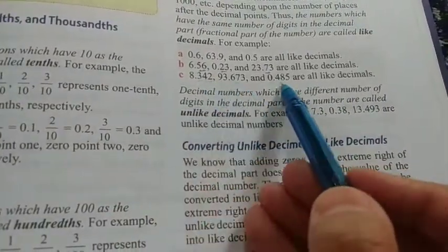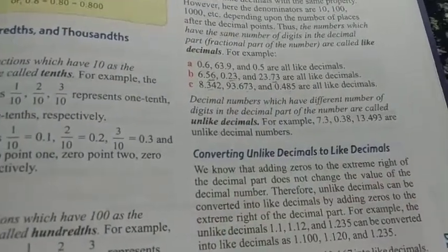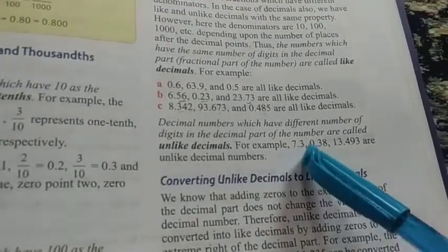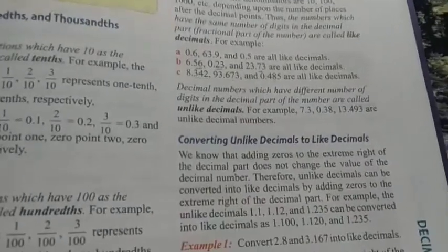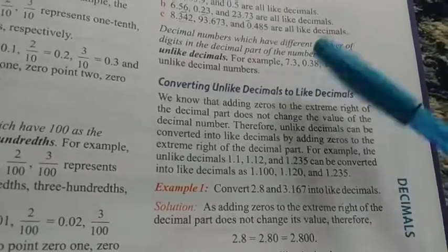If you see in this, yeh bhi same hai because 3, 3, 3 digits hai. Or jaha pae same nahi hoonge, those are the unlike decimals. Jisse yehaan pae 1 hai, yehaan pae 2 hai, yehaan pae 3 hai, so this is the unlike decimal.